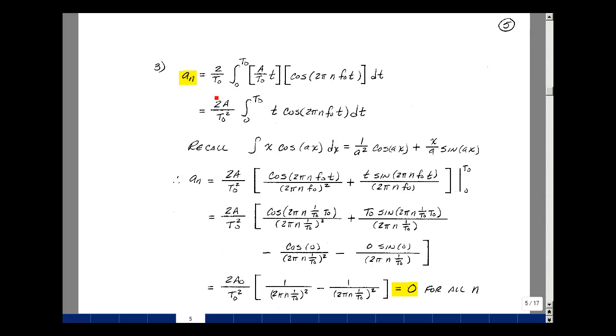The term a sub n is equal to 2 over t0, integral over a period of f of t times the cosine of 2 pi n f0 t dt. Our function is a over t0 times t. The a and the t0 are not a function of time. Pull those out in front. Then I have 2a over t0 squared, integral over a period of t times the cosine of 2 pi n f0 t dt.